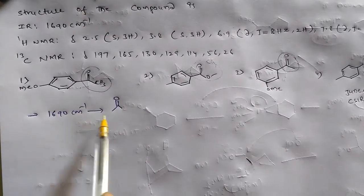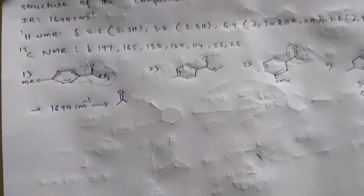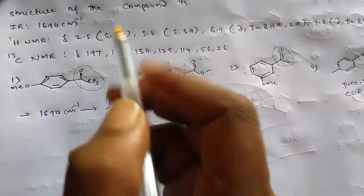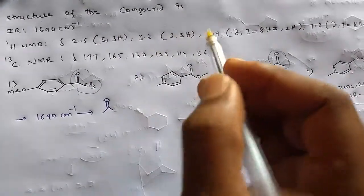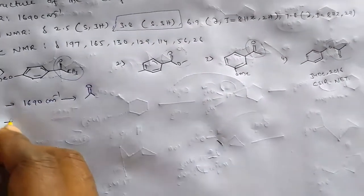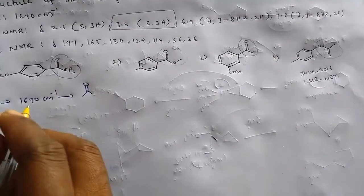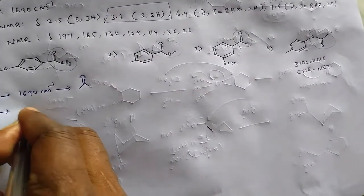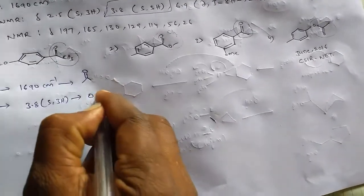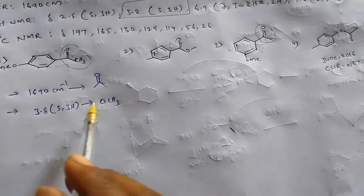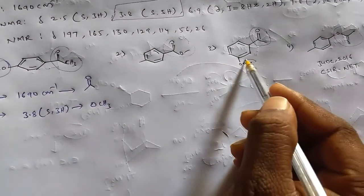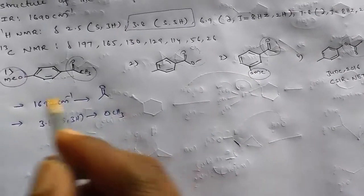Next, in the ¹H NMR, δ 3.8 singlet (3H) — this 3.8 singlet with 3 hydrogens exhibits the property of a methoxy group. So we have a single methoxy group. Observing the options, the methoxy group is present in the first option and in the third option.